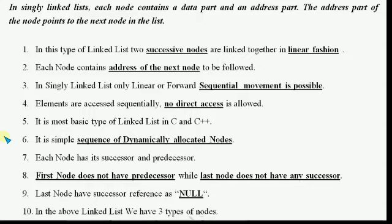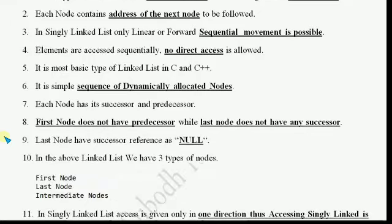Seventh point: each node has its successor and predecessor. The previous node is called predecessor and the forward/next node is called successor. The first node does not have a predecessor and the last node does not have any successor; the last node's reference is null.